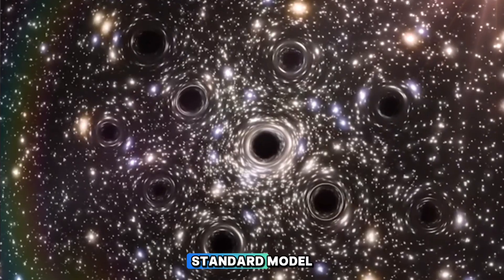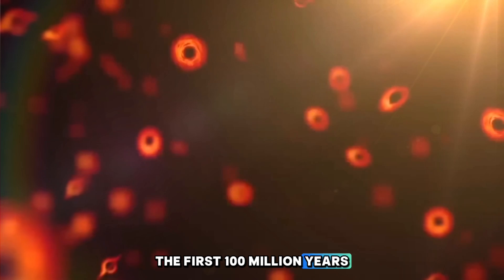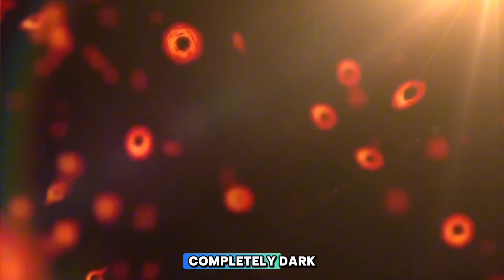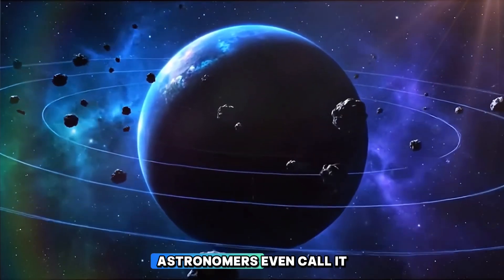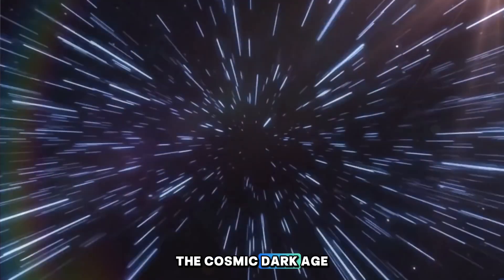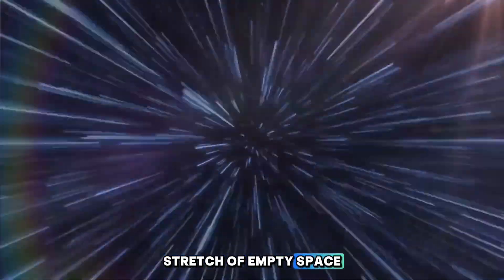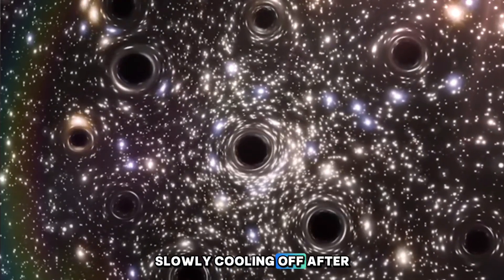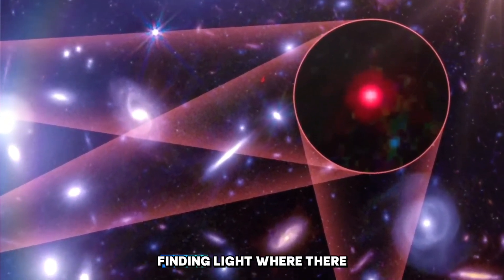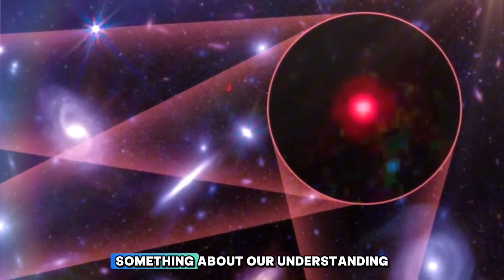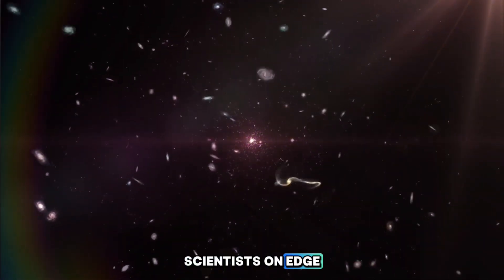But according to the standard model, that era should have been silent. The first 100 million years after the Big Bang were supposed to be completely dark. No stars, no galaxies, no light at all. Astronomers even call it the Cosmic Dark Age. Just a vast, cold stretch of empty space slowly cooling off after the fiery chaos of creation. And yet, Webb keeps finding light where there shouldn't be any. Something about our understanding of the universe is way off. And that mystery has scientists on edge.